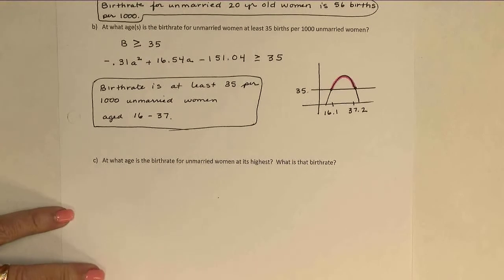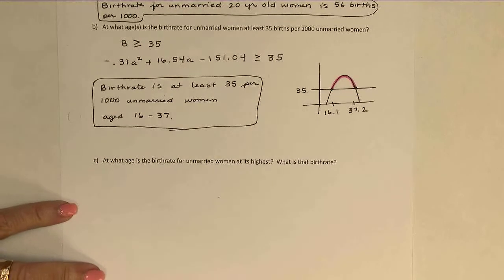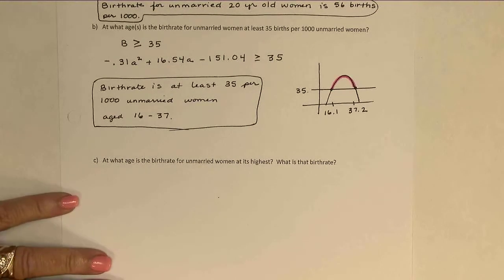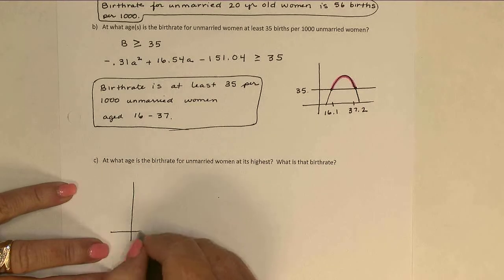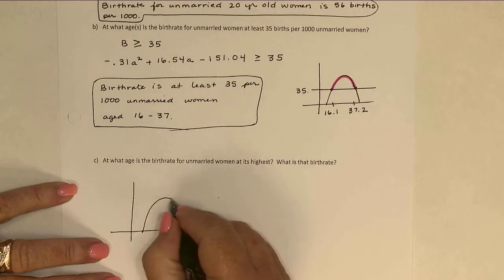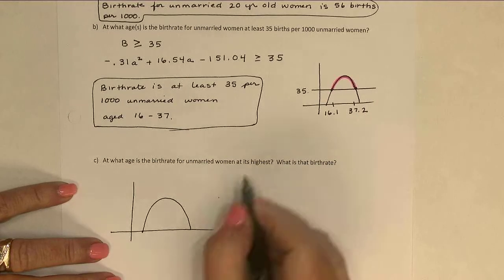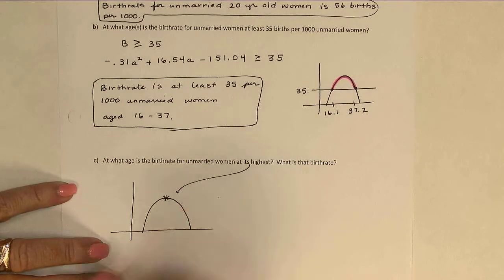All right, and then the last part of this one. At what age is the birth rate for unmarried women at its highest? And what is that birth rate? So here's that birth rate parabola again. And highest, once again, we are looking for the vertex.